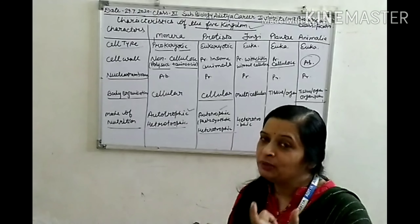In Animalia, tissues, organs, and organ systems are present. An organ system is made up of different types of organs. As we talk about human beings, many systems are present — such as the respiratory system, excretory system, and the reproductive system.